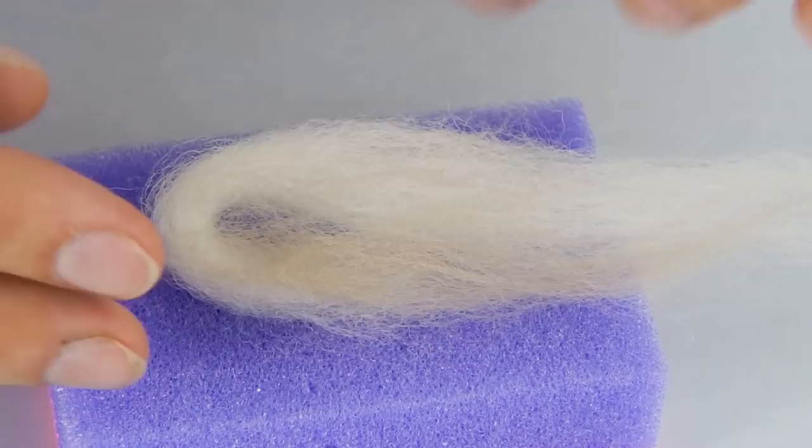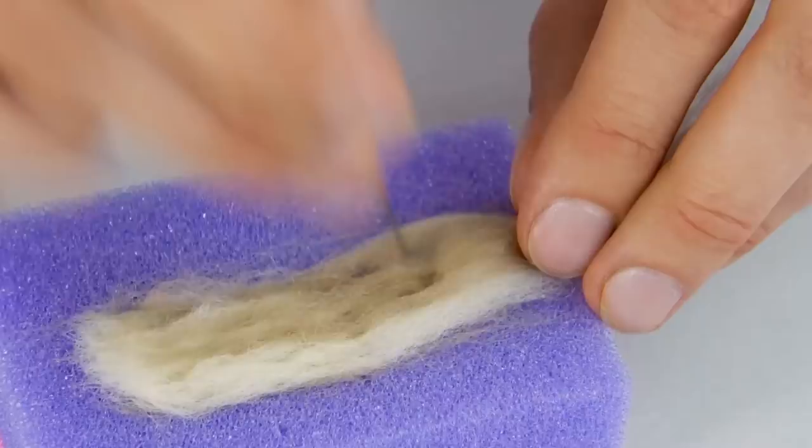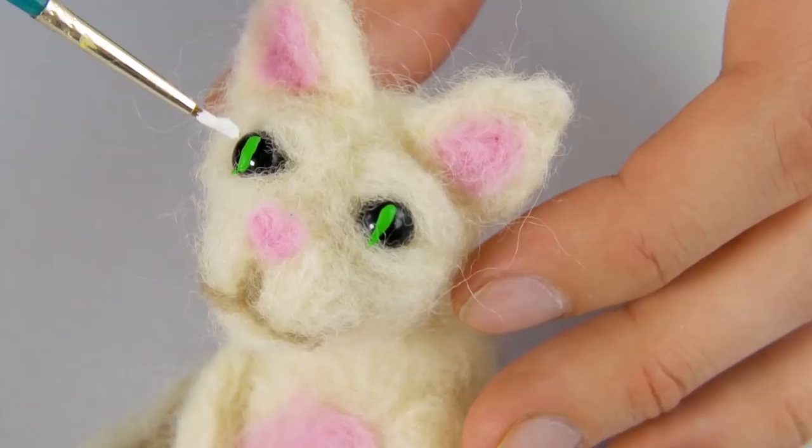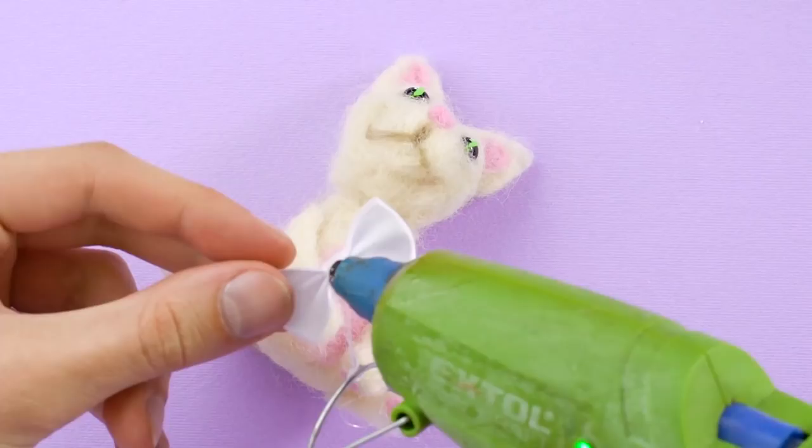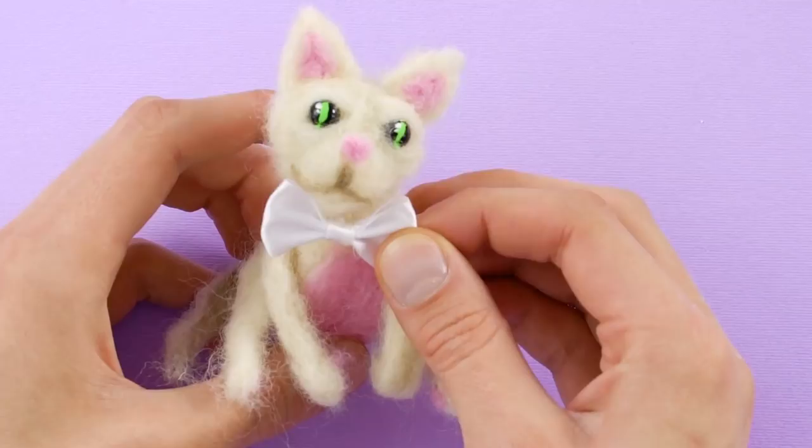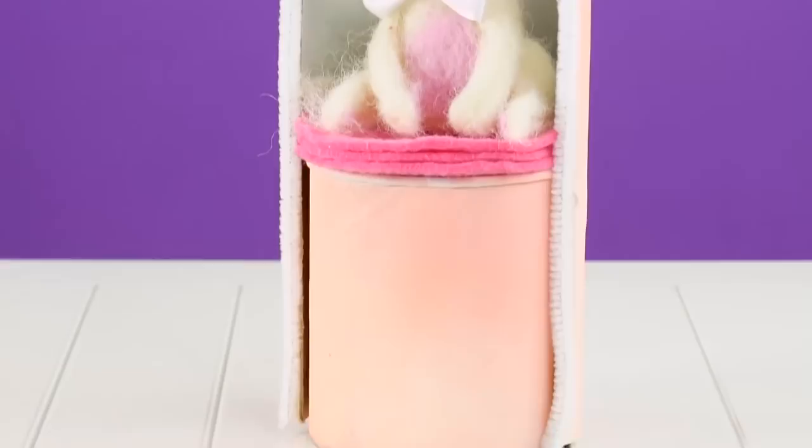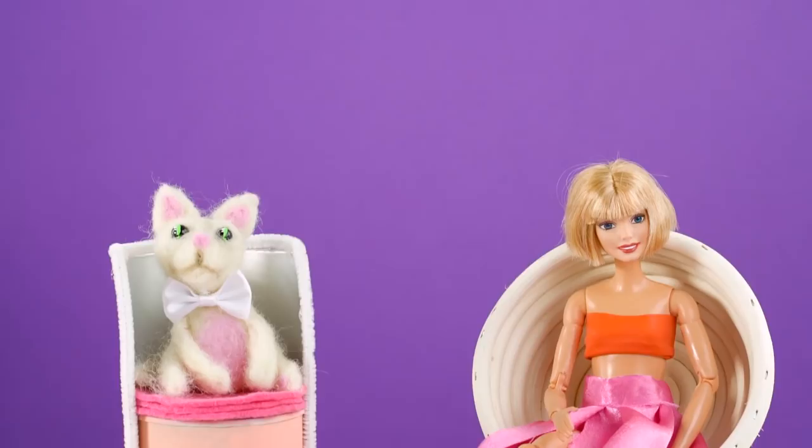Now for the tail. Paint some green lines down the center of the eyes and add some white dots. Let's give her a little bow too. Barbie's feline friend is all ready to go.